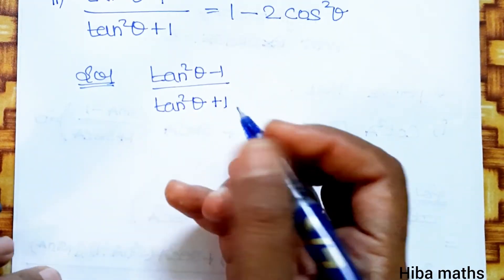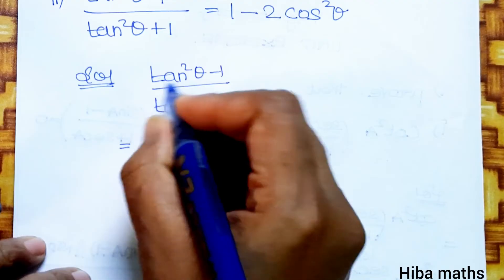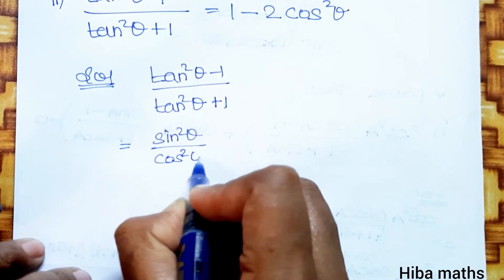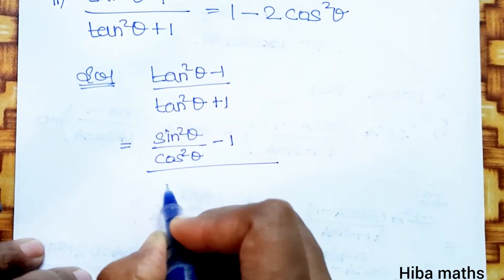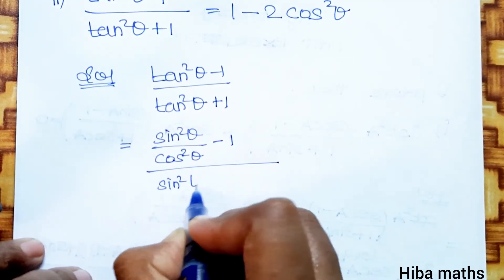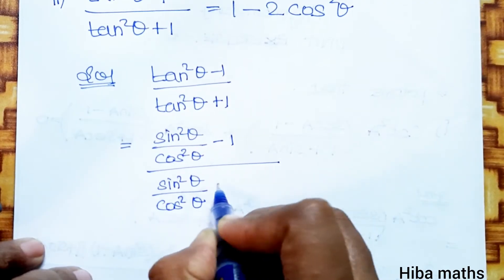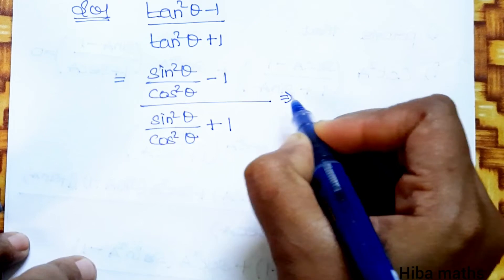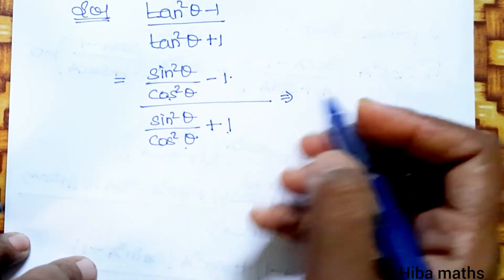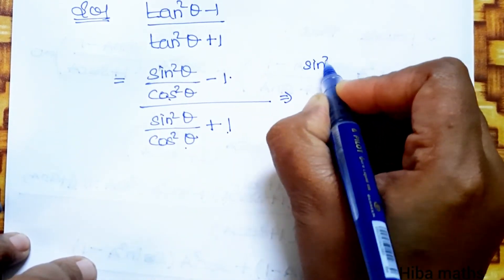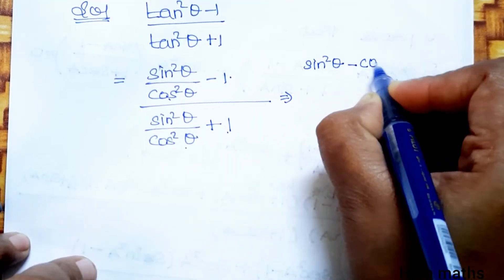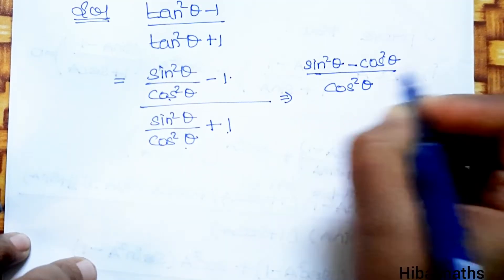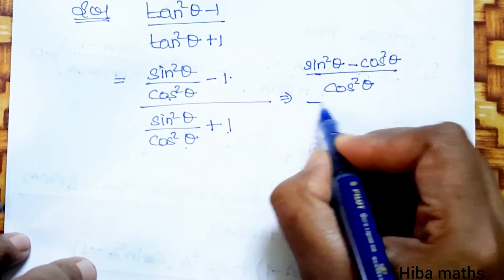Solution: Starting from LHS, we substitute tan squared theta as sin squared theta over cos squared theta. So the expression becomes: (sin squared theta over cos squared theta minus 1) divided by (sin squared theta over cos squared theta plus 1). Multiplying numerator and denominator by cos squared theta gives: (sin squared theta minus cos squared theta) divided by (sin squared theta plus cos squared theta).